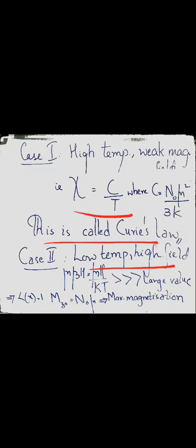Case 2: low temperature and high field. Here mu*beta*H = mu*H / kT is very large because H is large and T is small. In such cases L(x) → 1 as x becomes extremely large, so M_z0 = n_0 * mu — the magnetization reaches its maximum value. The system is in a state of magnetic saturation.